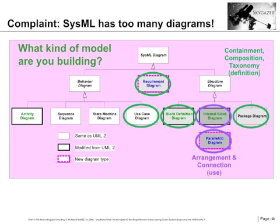In SysML, the way chapters are divided addresses how requirements, blocks, and packages are represented separately. But they really use the same kind of diagram when talking about containment, composition, and taxonomy — diagrams of definition — describing how you define something that gets used somewhere else. So, there are really only two kinds of diagrams so far.